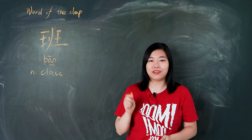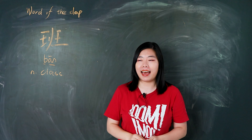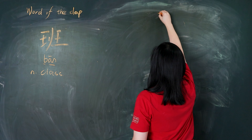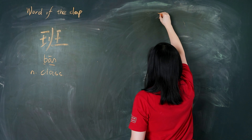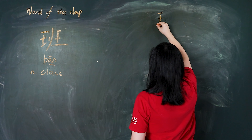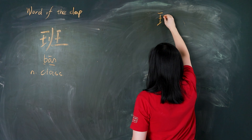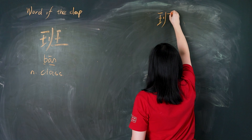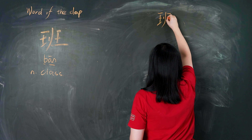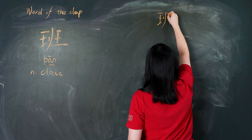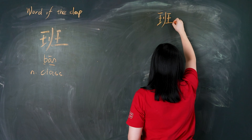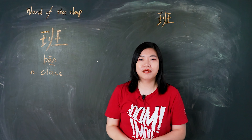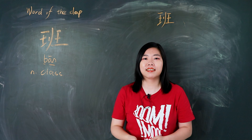Now let's write it. 我们一起写. 横 横 树 提 点 撇 横. 横. 树. 横 横. 班.